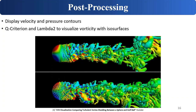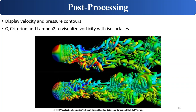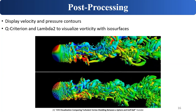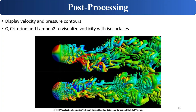From there you can do post-processing, which is the fun part. Assuming you have the correct answer, this is where you can display vorticity and pressure contours. My favorite is displaying the iso-surfaces of vorticity, which people usually use Q-criterion or lambda-2. You can show on the surfaces the velocity or whatever you think looks best.